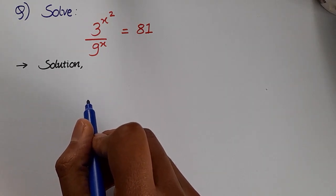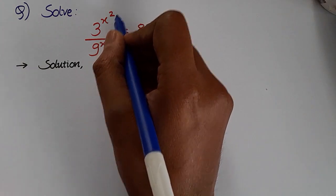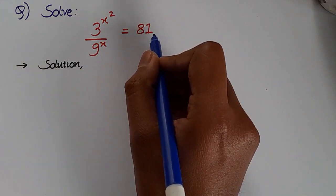How to solve for the value of x that satisfies the given equation? We have 3^(x²)/9^x = 81.